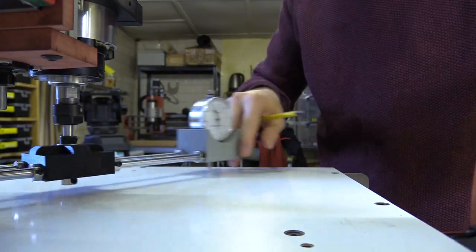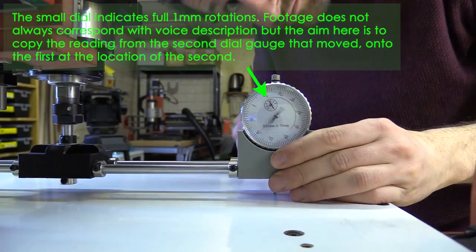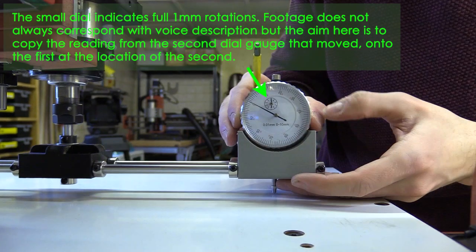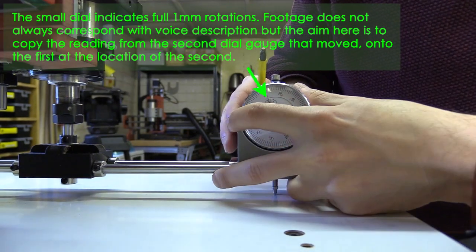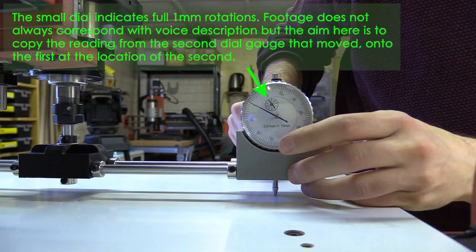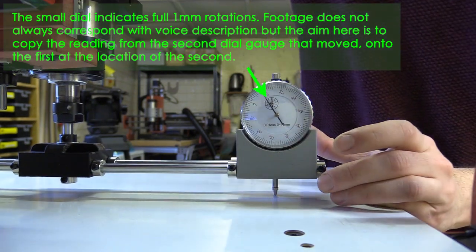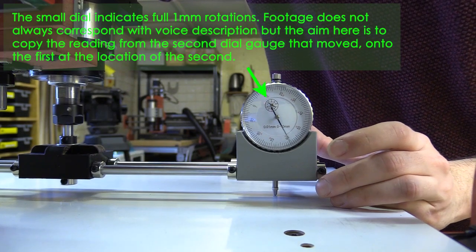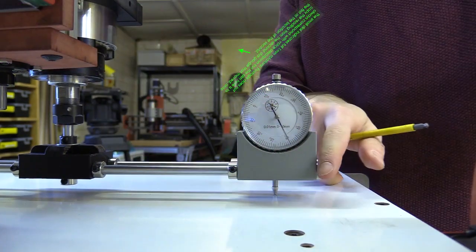You then need to rotate the jig 180 degrees and loosen the dial gauge which had moved first. In this new position you're going to lift the dial gauge so the probe just touches the waste board and then lock that position. This is where those grub screw holes I pointed out in the 3D model might come in useful for fine adjustments.